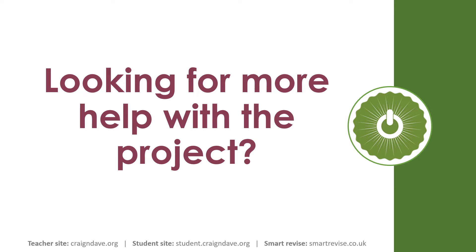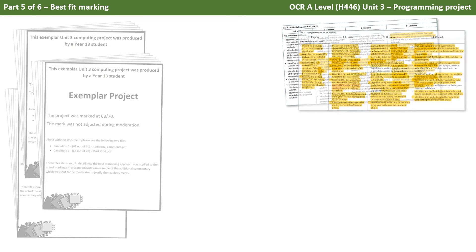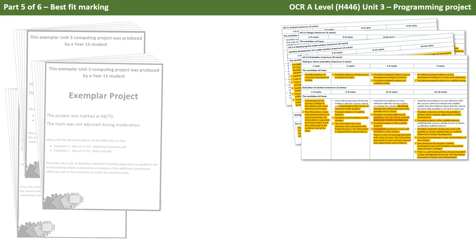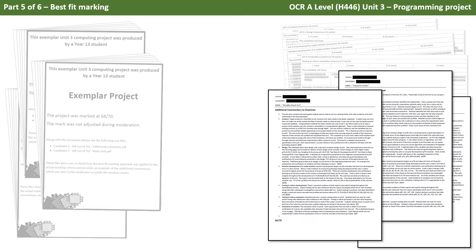Are you looking for more help or guidance with the project, either as a student not sure what to do or as a teacher delivering the project for the first time? With a Craig and Dave premium membership you'll get access to the following resources. We provide three exemplar projects — two graded at an A and one at an A-star — which have been submitted by our candidates, moderated and approved by an exam board, with marks not adjusted, so you can be sure these are of high quality and match the mark scheme. Along with these projects we provide the marking grid we used, highlighting how we applied the marking criteria against each exemplar project, plus additional commentary explaining how we found the evidence and applied it against the mark scheme.